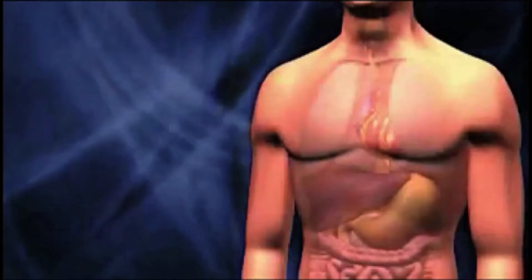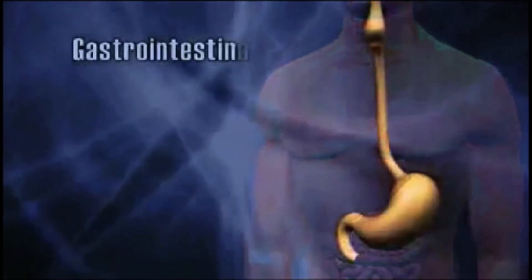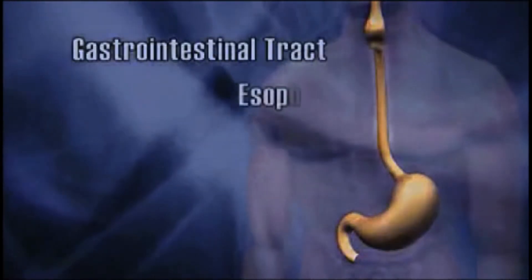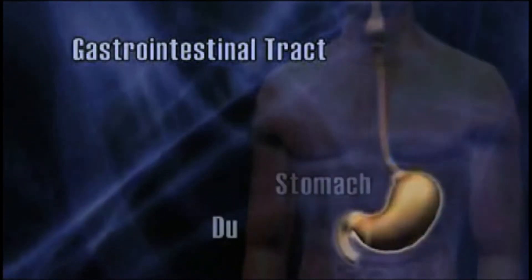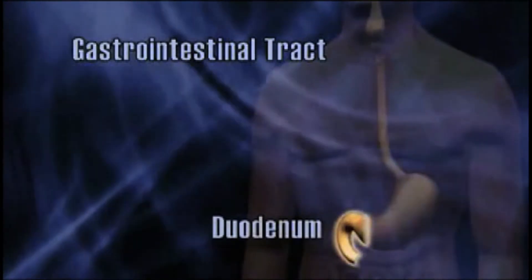The term endoscopy refers to a special technique for looking inside a body part. Upper GI is the portion of the gastrointestinal tract that includes the esophagus, the stomach, and the duodenum, which is the beginning of the small intestine.